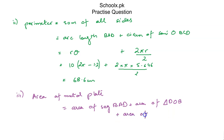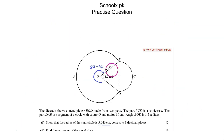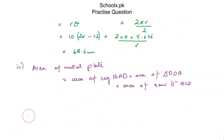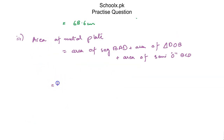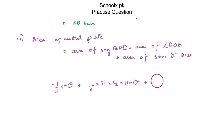Area of segment BAD uses the formula ½R²θ, where R = 10 and θ = 2π − 1.2. For the area of triangle BOD, I'll use ½ × side1 × side2 × sin(angle between them). For the semicircle BCD, the area formula is πr² / 2.